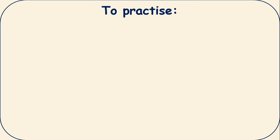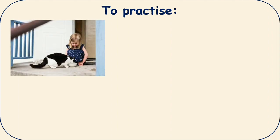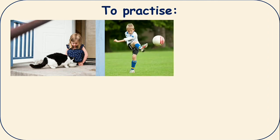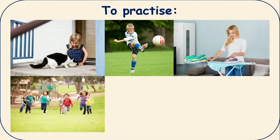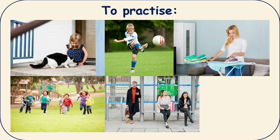To practice more present continuous, you can surround yourself. This is the best advice I can give you to practice present continuous. You must be having people around you. If you see any girl is feeding her cat, so you can say she is feeding her cat. If a boy is playing football, you can say the boy is playing football. Lady is ironing her clothes. Children are playing in the park. And if you see people are waiting, so you can say people are waiting for bus.